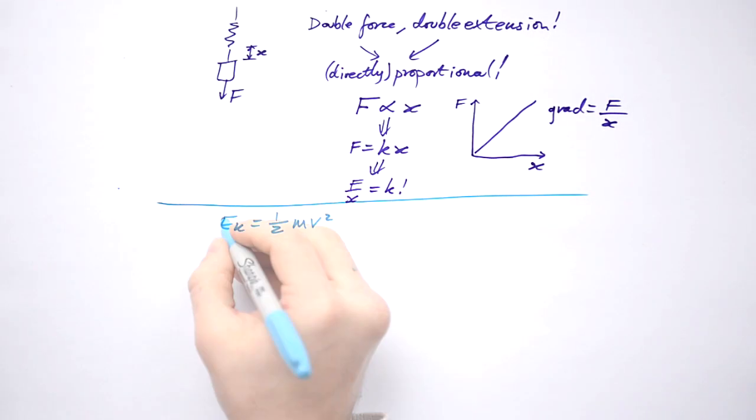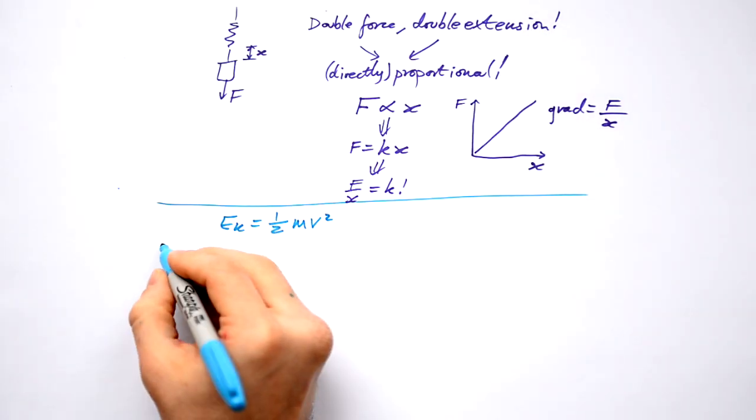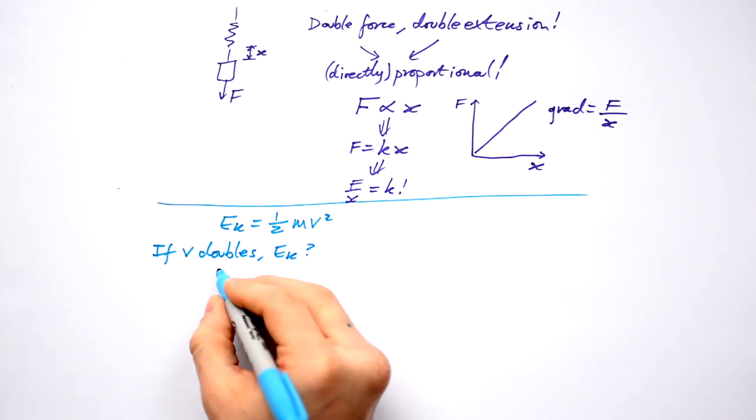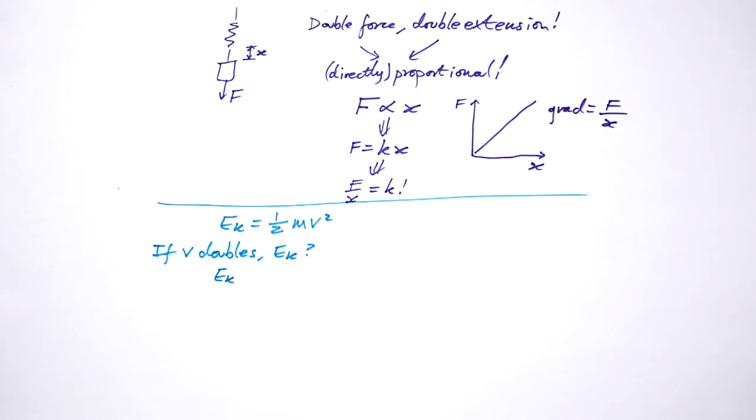What about if it gets a little bit tricky though? Let's think about kinetic energy. Ek equals half m v squared. Now what if I said v doubles, what happens to the kinetic energy? Now it's good practice to find out how Ek, kinetic energy, is proportional to the velocity.